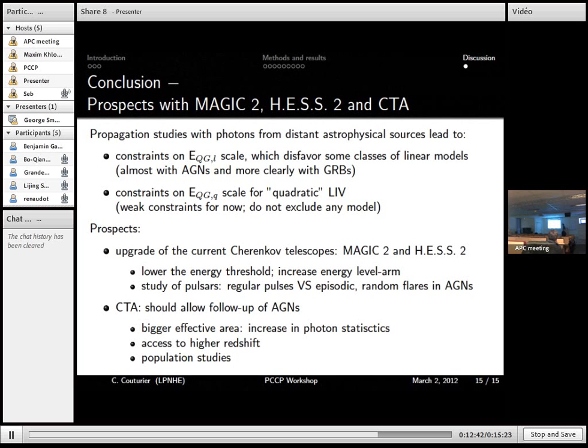And for future, CTA, that is a very large array of Cherenkov telescopes. It should allow us to follow up AGNs. There will be a bigger effective area. So more statistics, we could access to higher redshift. And we hope that we will detect more AGNs and be able to make population studies. Thank you.